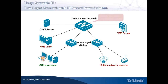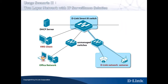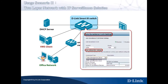Like Usage Scenario 1, you only need to enable the Auto Surveillance VLAN feature. D-Link network cameras are automatically added to Auto Surveillance VLAN with high priority. To record and view videos from the network cameras, we have to add the MAC address of the VMS server to the Smart 3 switch Auto Surveillance VLAN settings, following the steps for adding user-defined MAC settings shown in Usage Scenario 1.